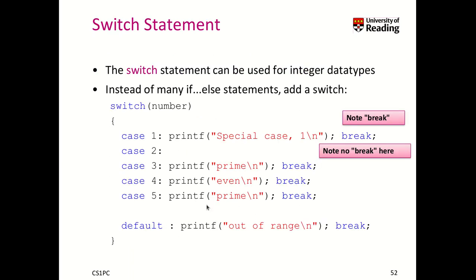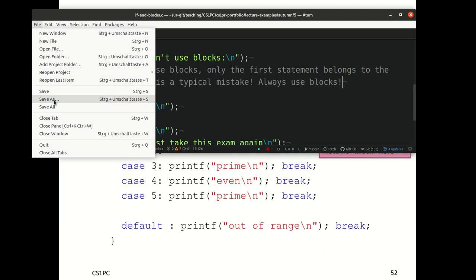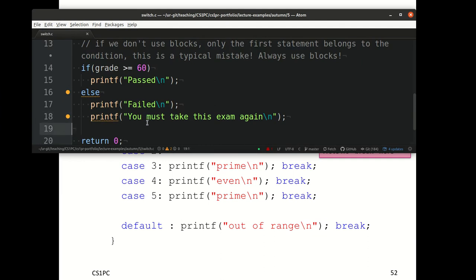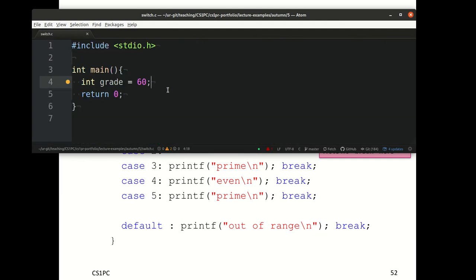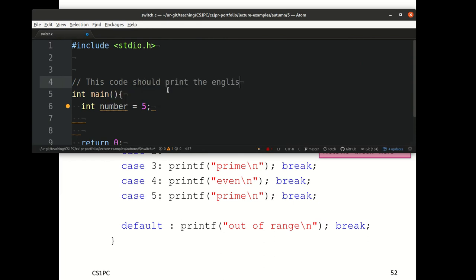Now let's have a look at the switch statement. It can be used for any integer type of data. Instead of using many else statements, you can use a switch. Here we see an example. Let me create another example for you which completes our exercise from before. Let's take a number. This code should print the English representation of a number.